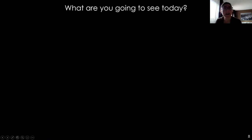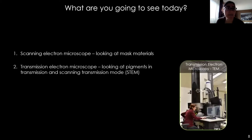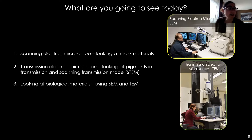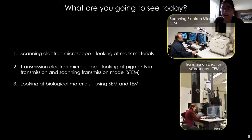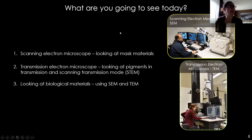Today we'll focus on both types. First, we'll look at the scanning electron microscope with Joiner examining mask materials. Next, we'll look at the transmission electron microscope examining different pigments found in car paint or wall paint. Then with Marcia, we'll look at biological material and see how the SEM and TEM can be used as a holistic method at different resolution scales. Any questions so far? None yet, but they'll come when we start watching the videos.